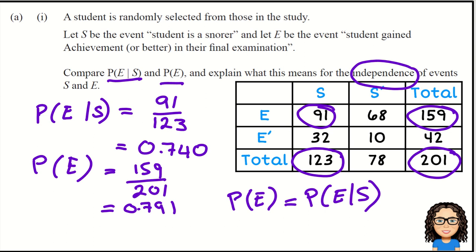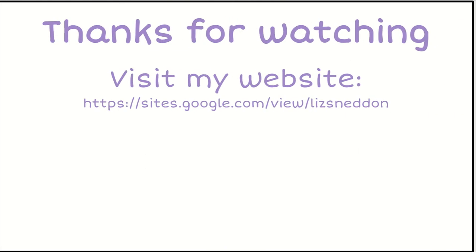However, in this case, they are not. 0.791 does not equal 0.740. Therefore—and my three little dots there mean therefore—S and E are not independent.